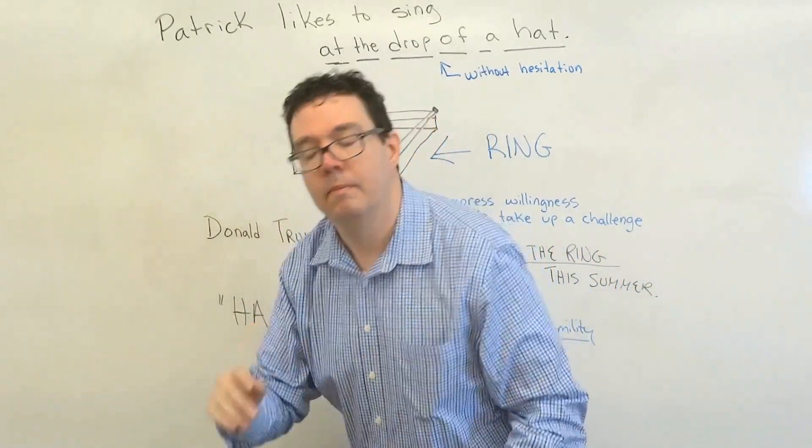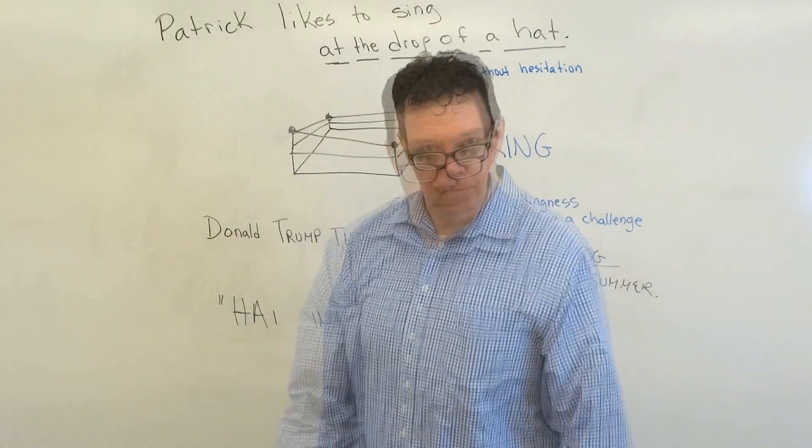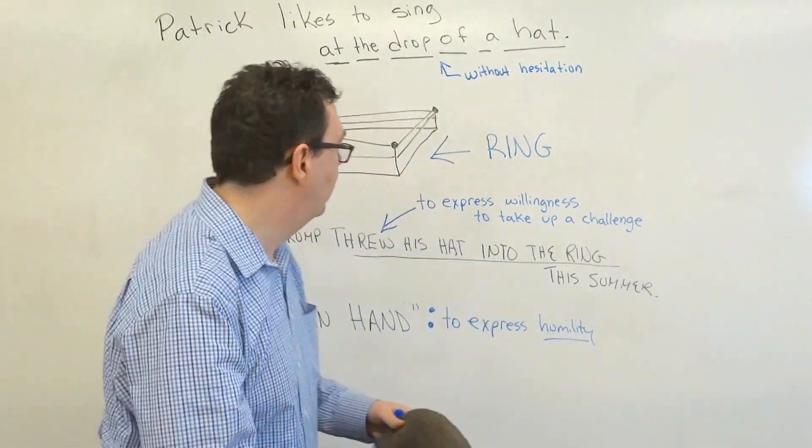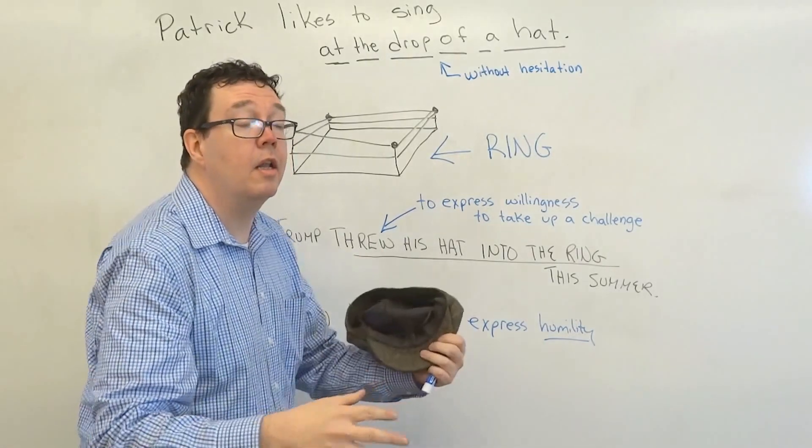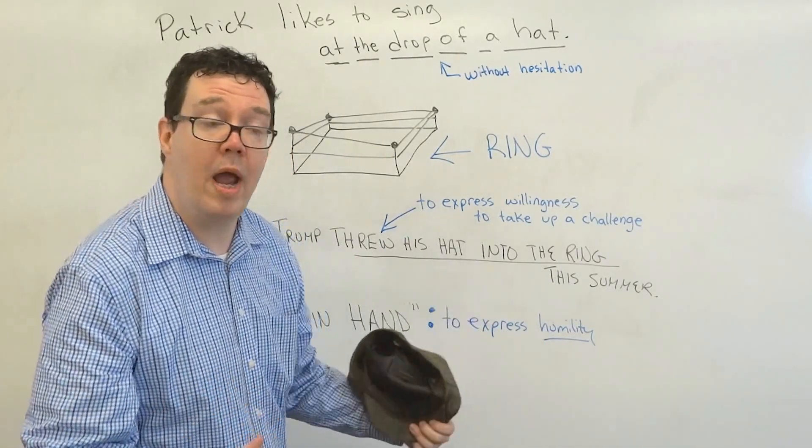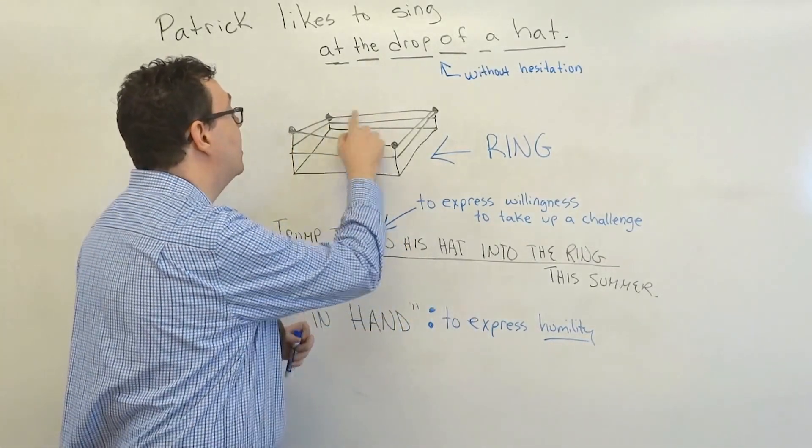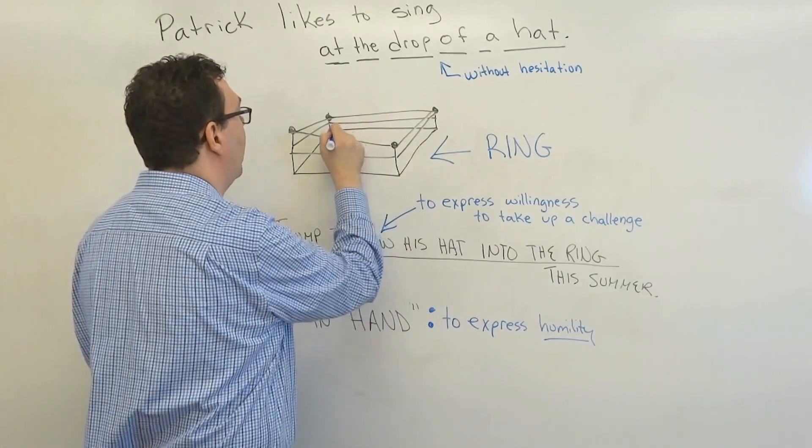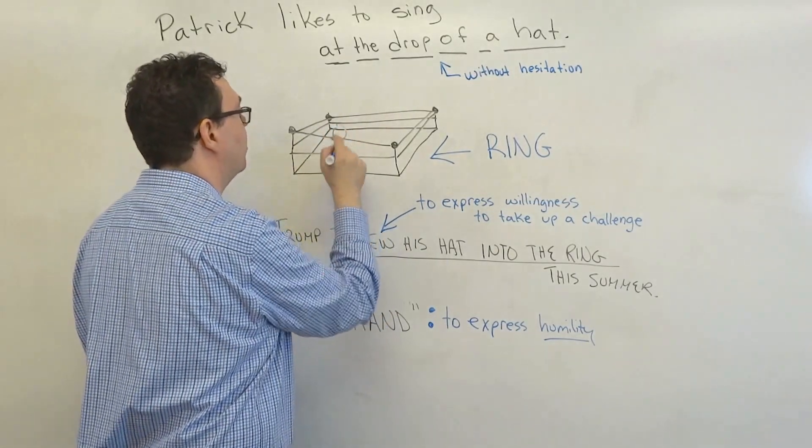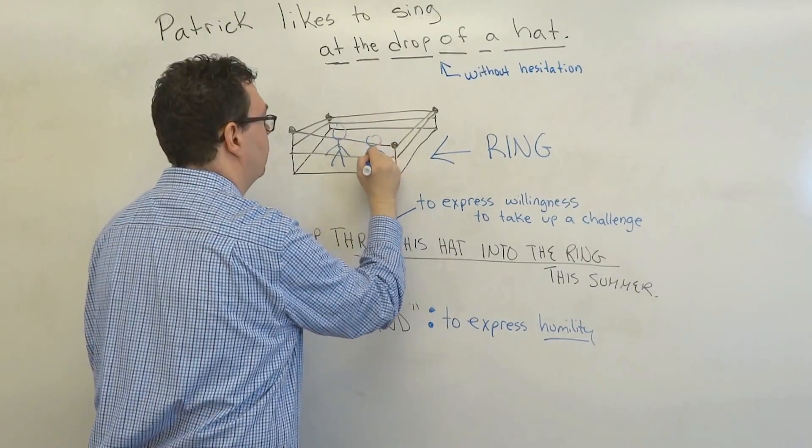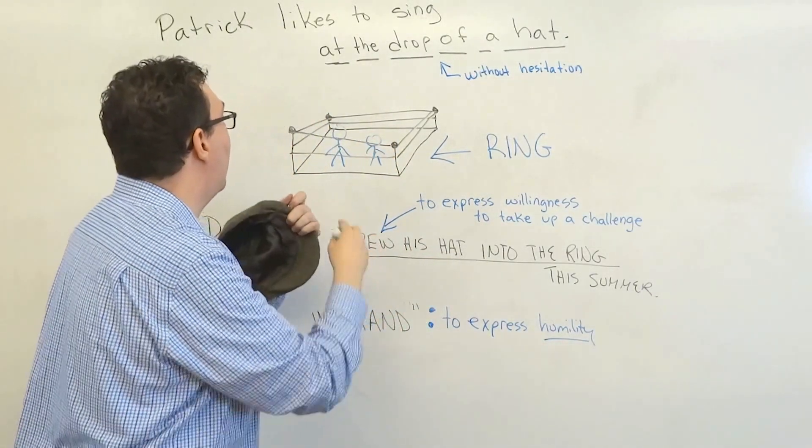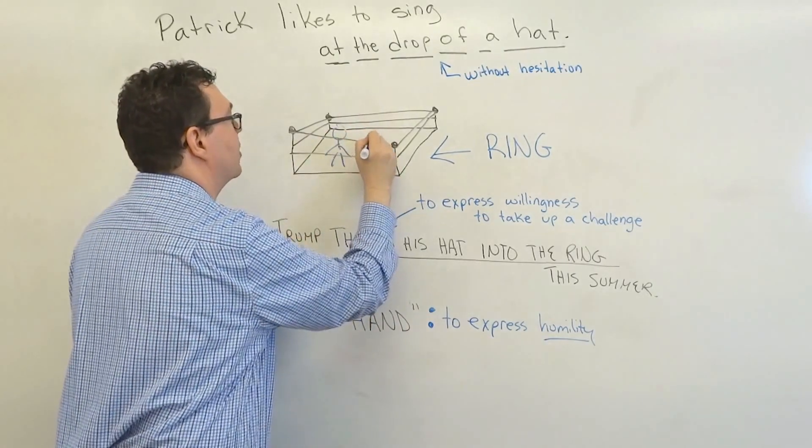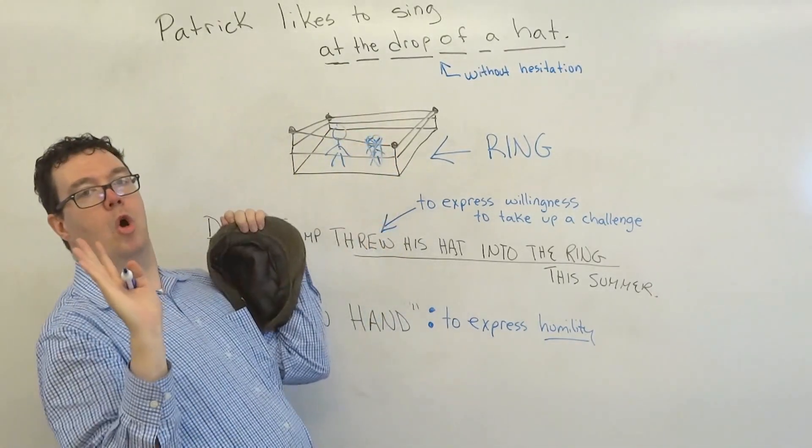A hundred years later or so, people started boxing or fighting in a little bit more of an organized way. They would get into something like this, which is called a ring. So here's one guy. Here's another guy, a little bit smaller, this guy. And now this guy fights this guy and all of a sudden, oh, he's out. He's out cold.